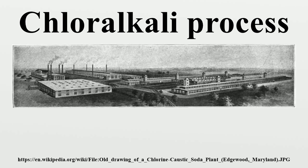Cl₂ + 2OH⁻ → Cl⁻ + ClO⁻ + H₂O. Above about 60 degrees Celsius, chlorate can be formed: 3Cl₂ + 6OH⁻ → 5Cl⁻ + ClO₃⁻ + 3H₂O, because of the corrosive nature of chlorine production.